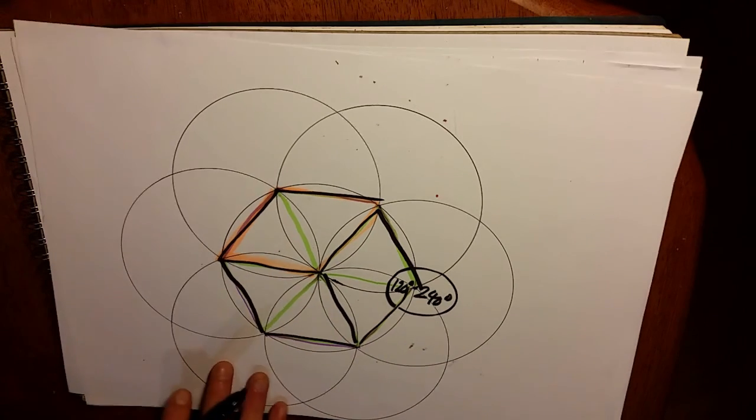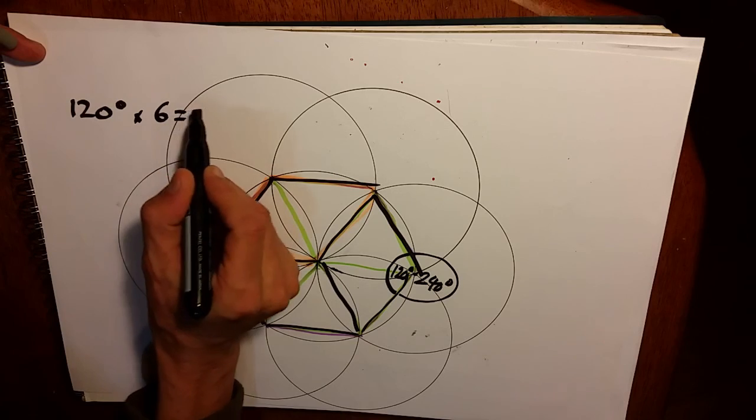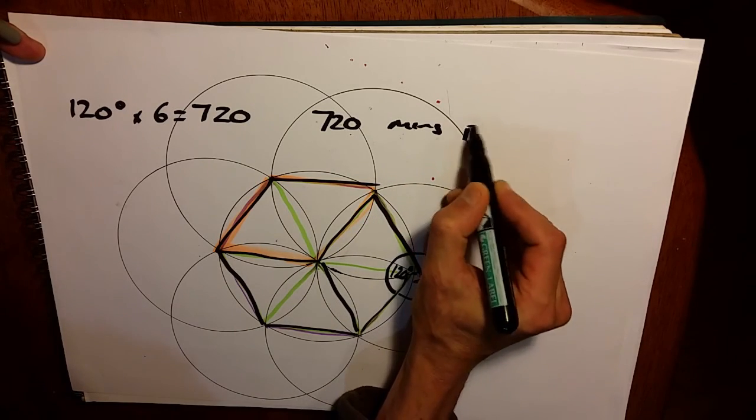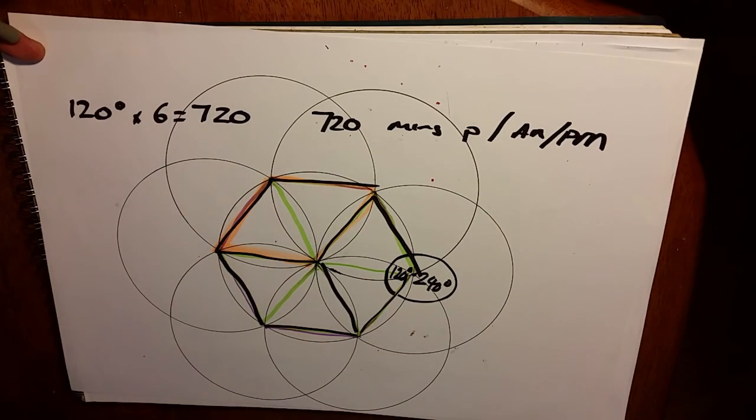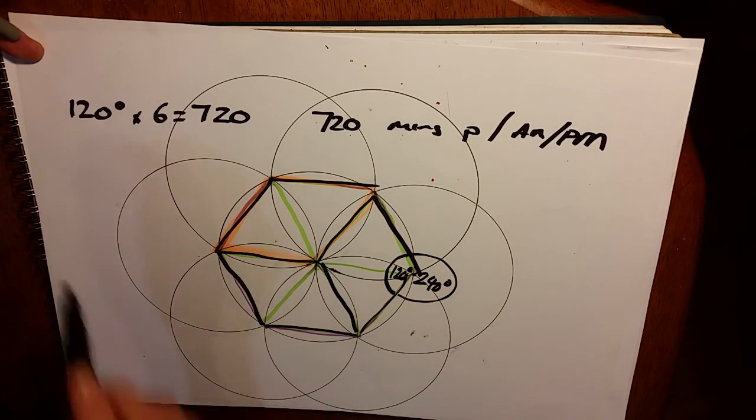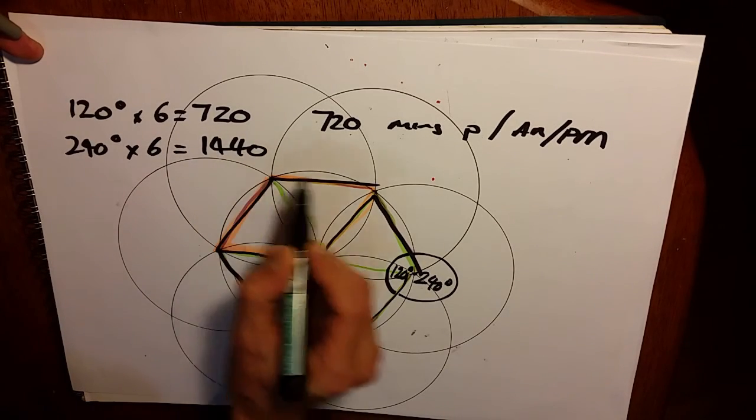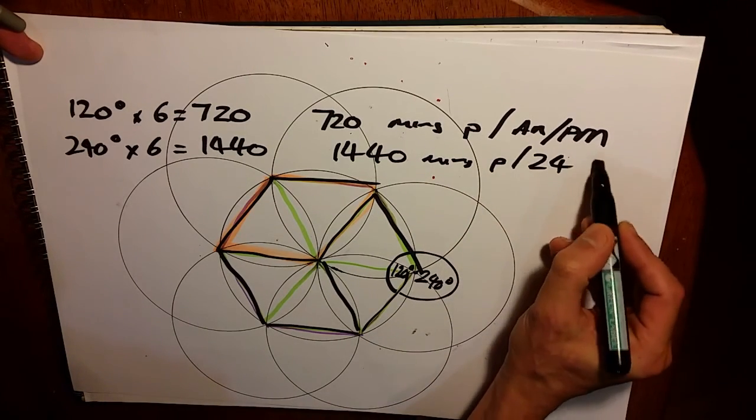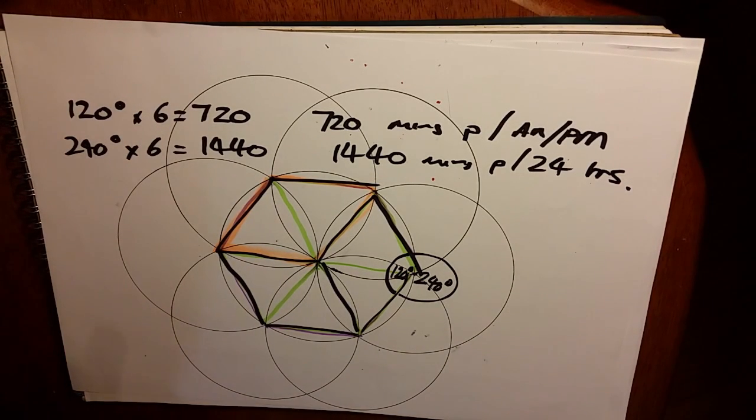Six sides. So 120 degrees times six equals 720. 720 minutes per AM or PM. So every 12 hours we have 720 minutes, the 12 hour clock face. The exterior is 240 times six equals 1440. 1440 minutes per day, per 24 hours.